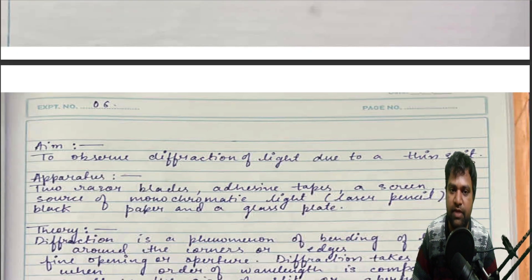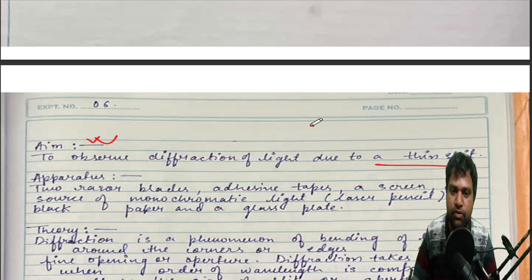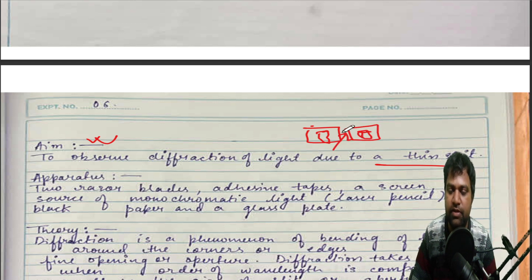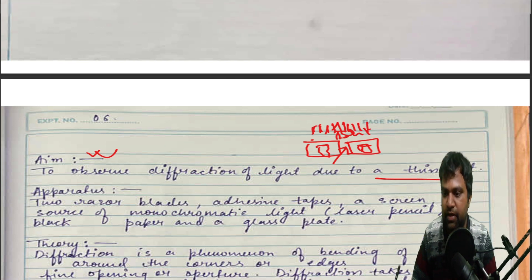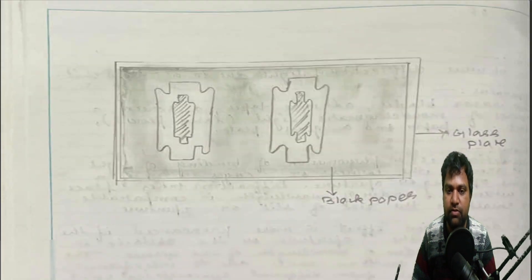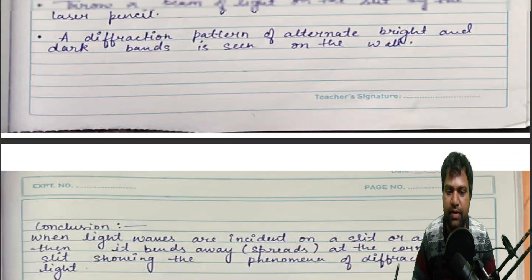Activity number six is to observe the diffraction pattern. You take two blades and hold them close together to create a thin gap or slit, then shine light through the narrow gap. You will observe the diffraction pattern — bright, dark, bright, dark, bright, dark — with a central maxima. Draw the diagram and perform the activity with the two blades and a narrow gap.